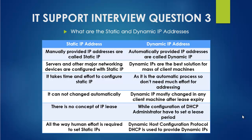For a static IP address, human effort is always required to configure it — it won't change or correct automatically. In contrast, for dynamic IP addresses, we have the Dynamic Host Configuration Protocol (DHCP), which is used to provide dynamic IPs. DHCP is used throughout network devices, even in home routers. When your phone needs network access, it raises a request to the router, DHCP responds, and provides an IP address automatically.